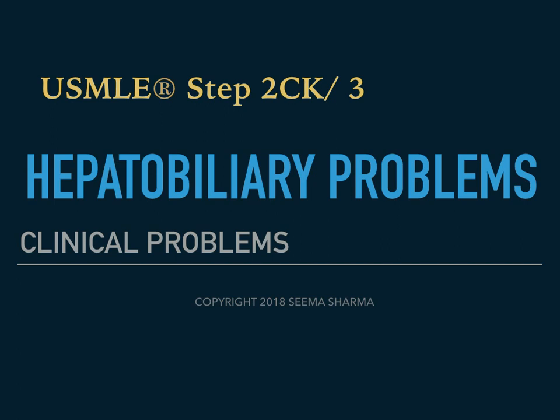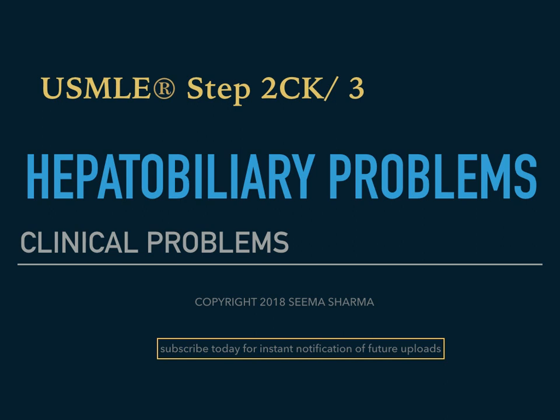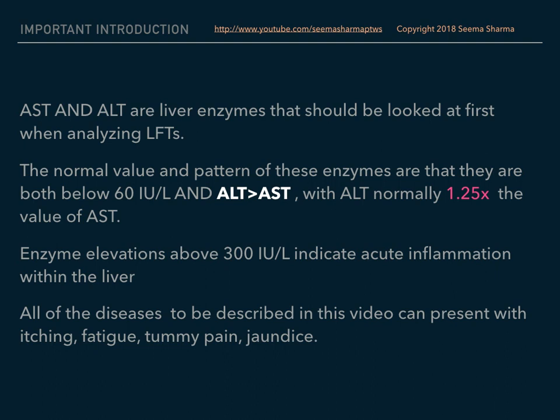Welcome to my video on hepatobiliary problems. AST and ALT are liver enzymes that should be looked at first when analyzing LFTs. The normal values are that they are both below 60, and the ALT is greater than the AST, with the ALT being 1.25 times the AST. Enzyme elevations above 300 indicate acute inflammation within the liver.